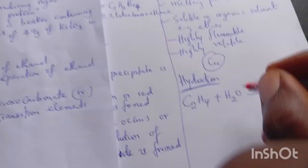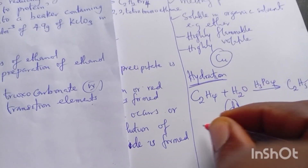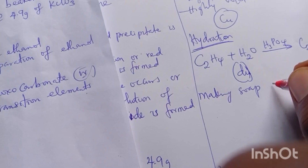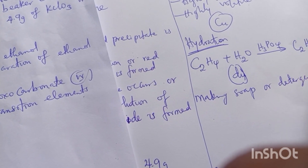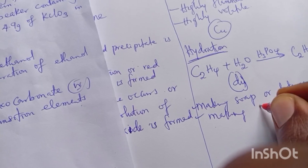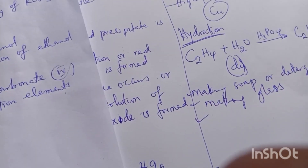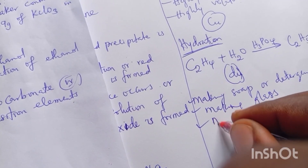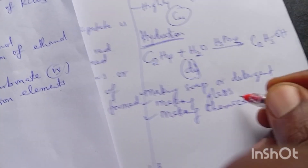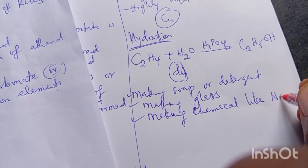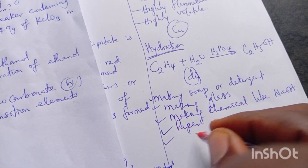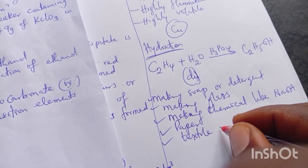Part (d)(i): mention uses of sodium carbonate. Sodium carbonate is used for making soap or detergent, making glass, making chemicals like sodium hydroxide (NaOH), making paper, and use in the textile industry.